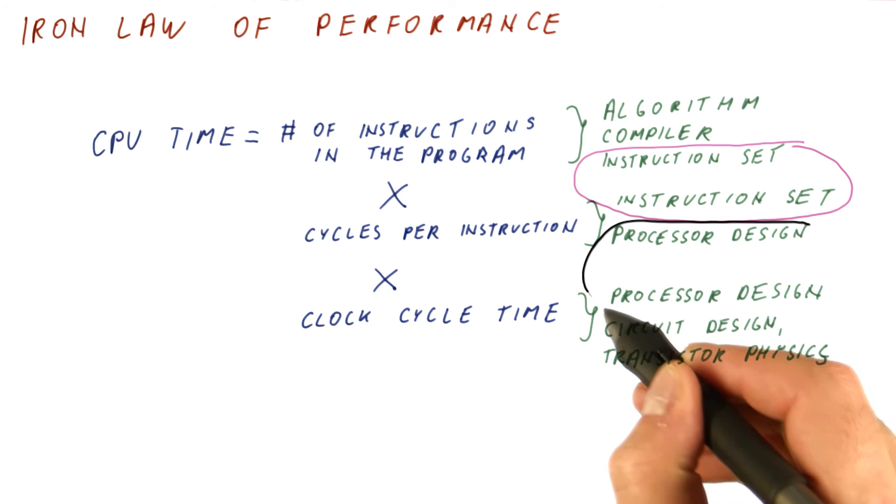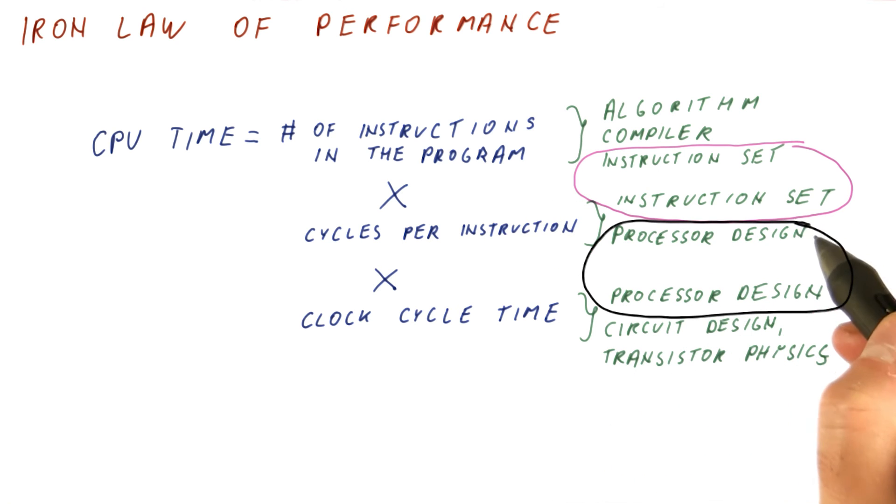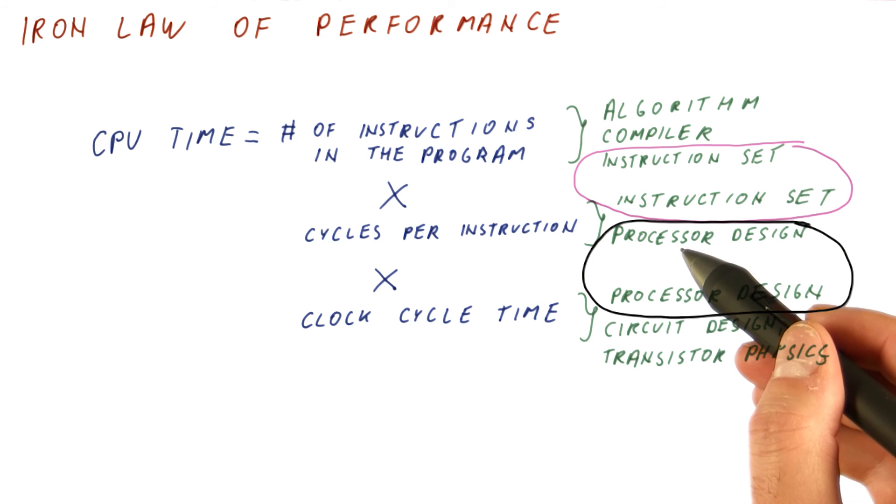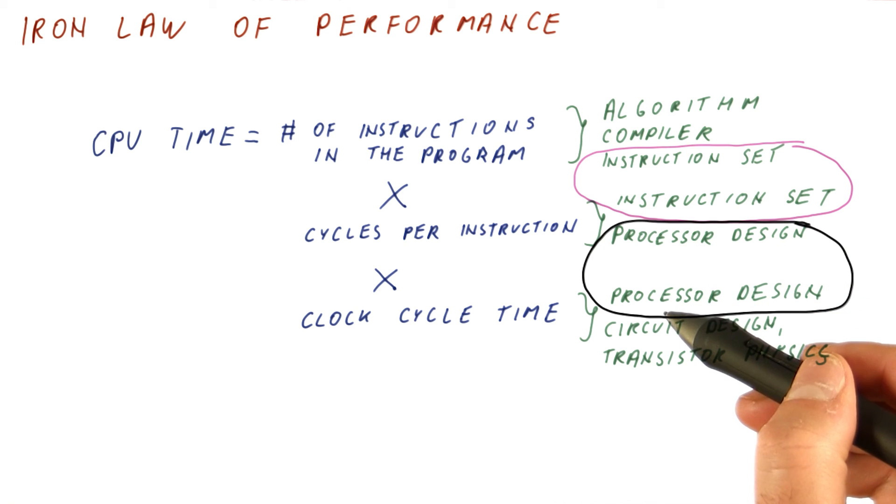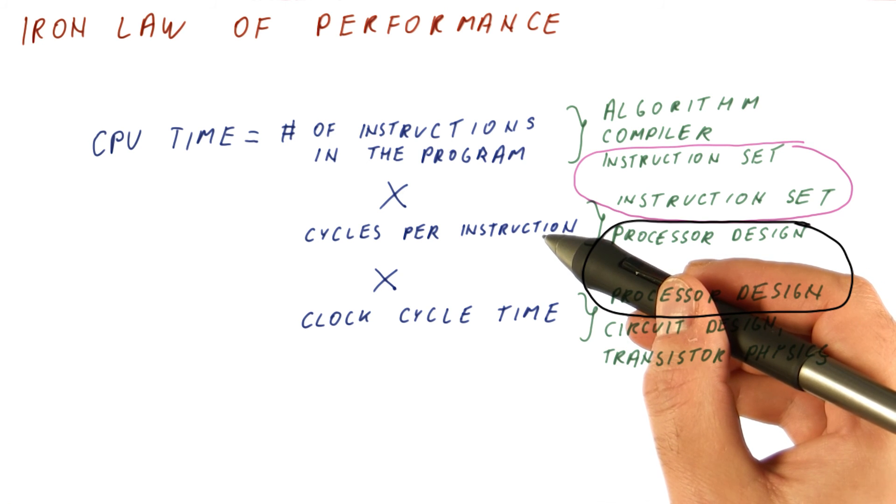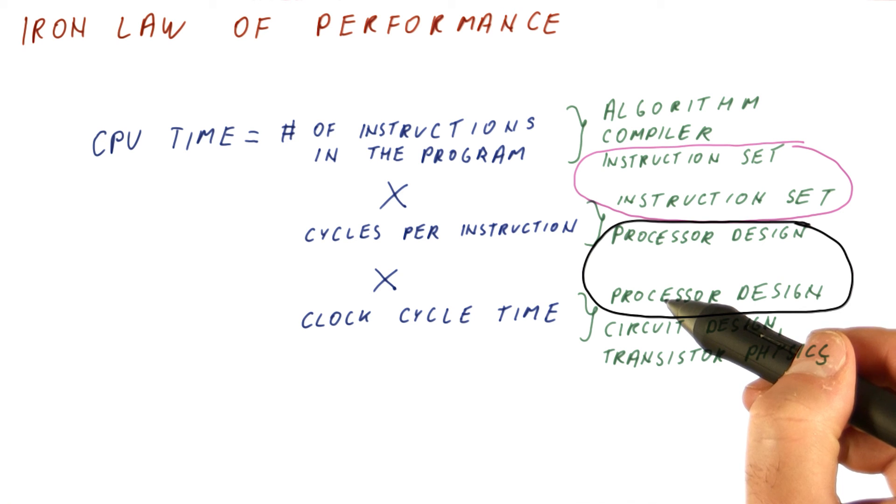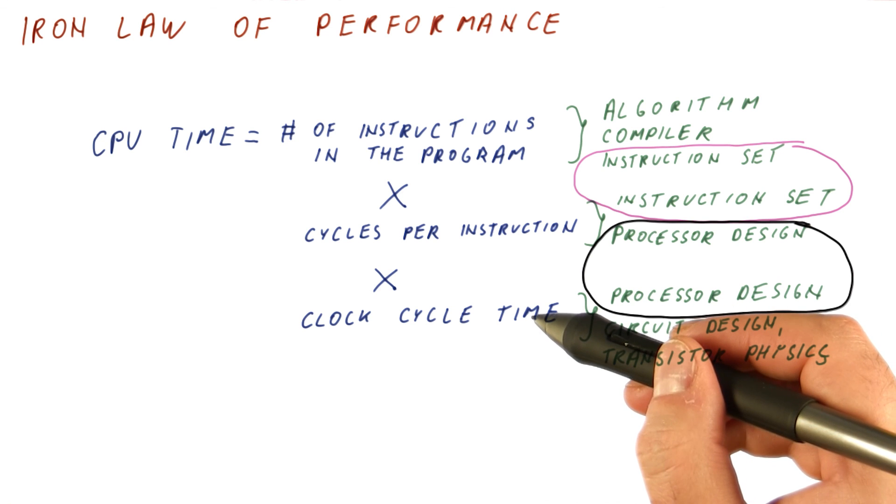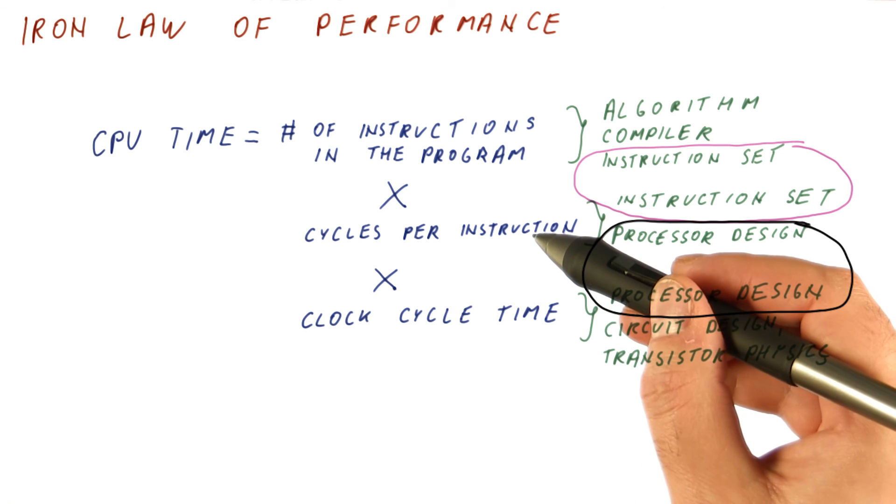And also, computer architecture is affected by processor design. So, in processor design, we have a choice of making a processor that has a very short clock cycle, at the expense, possibly, of spending more cycles per instruction. Or we can have a processor that spends a lot of work in a cycle, thus reducing the number of cycles it needs per instruction.